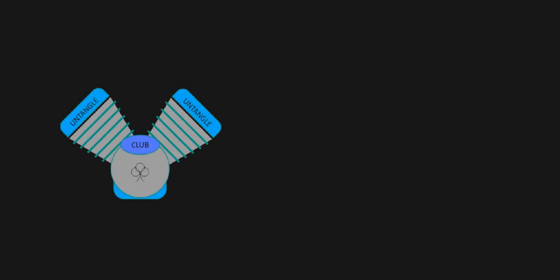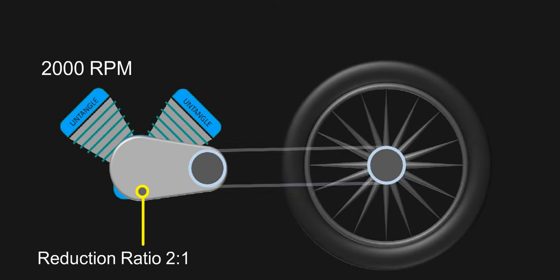First let's understand the system condition. Let's consider the engine is running at 2000 RPM. The gearbox is converting it to 1000 RPM with a reduction ratio of 2 to 1, and transmitting that motion to the wheel via chain at a ratio of 1 to 1. Hence, the wheel is also revolving at 1000 RPM.